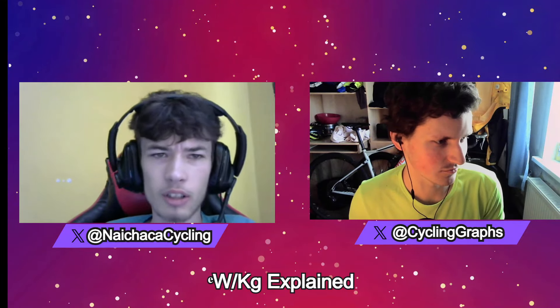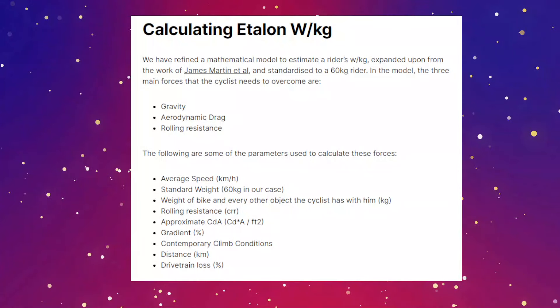The method I use is from J. Martin, who established it in the 1990s. It's the most accurate formula available, and I think everyone who calculates more often uses this method. I combined it with a model we made ourselves for calculating the impact of drafting, so we can remove those watts and get the total value. It takes into account all the different factors like gradient, wind, and so on.